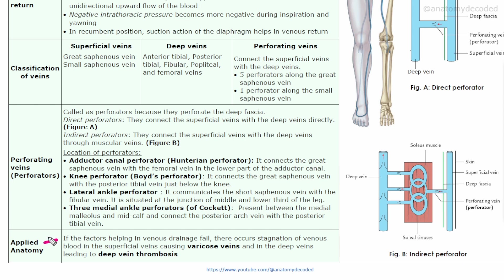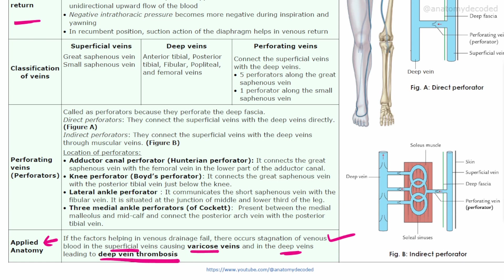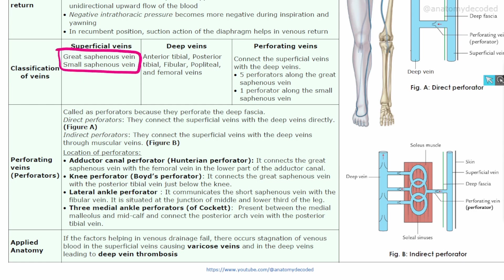As applied anatomy related to this, if there is any stagnation of venous blood, stagnation in superficial veins is referred to as varicose veins, and stagnation in the deep veins is referred to as deep vein thrombosis. We will now learn details about the great saphenous vein, small saphenous vein, and their related applied anatomy.